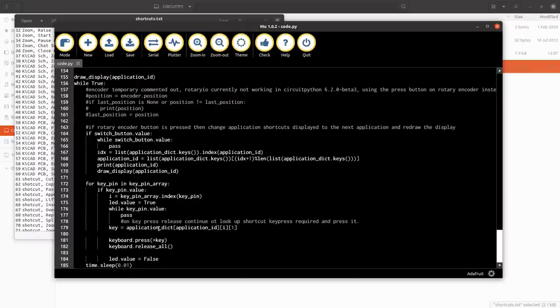It will look to see if a key is pressed and which key is pressed. And on release of that key, it will then look up what program, what application and what shortcut was pressed and press the key in the Adafruit library that that shortcut needs to press release and then go back and wait for the next shortcut to be pressed.